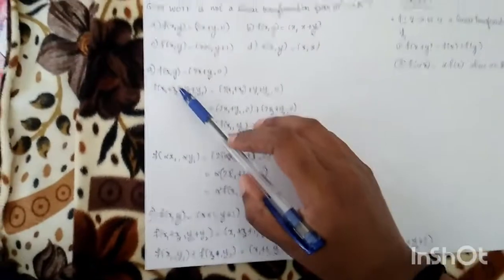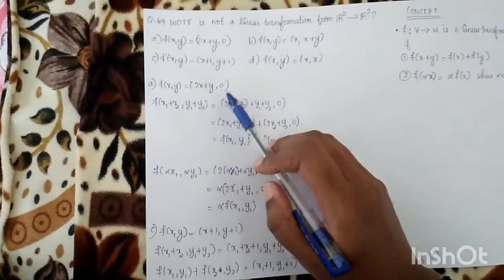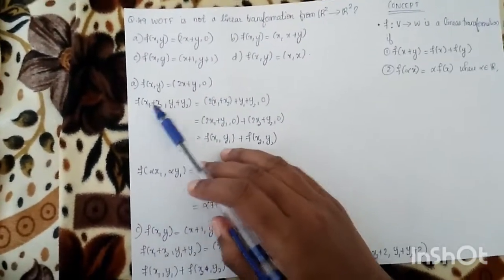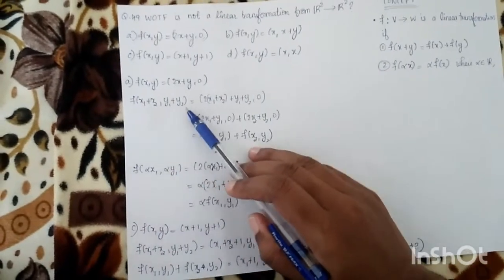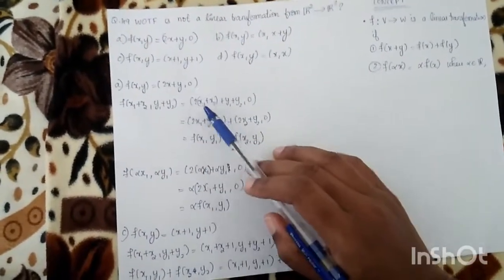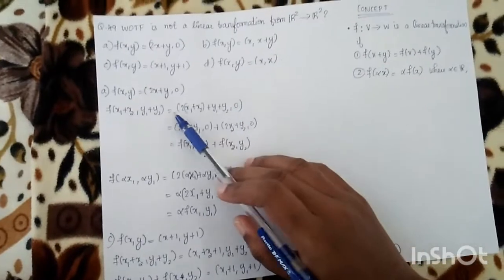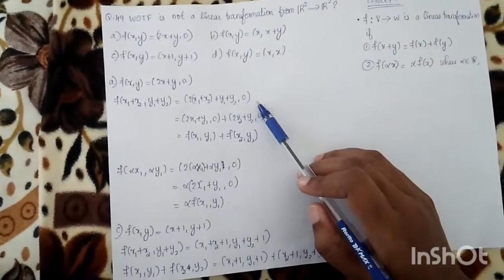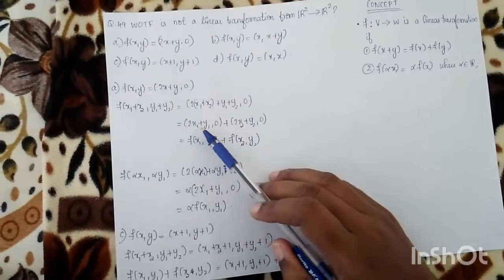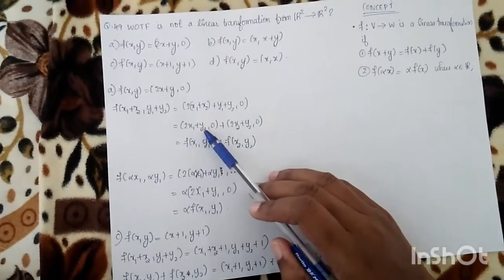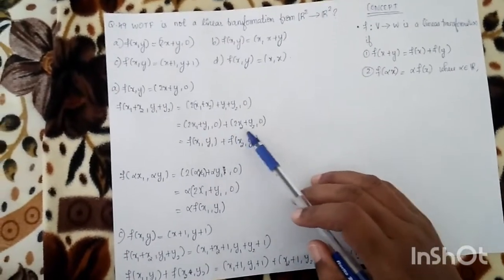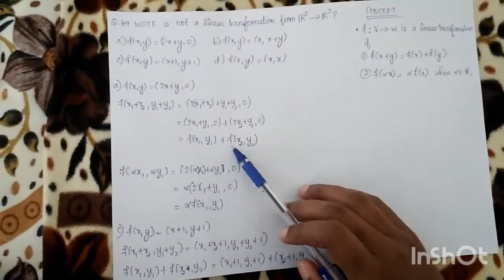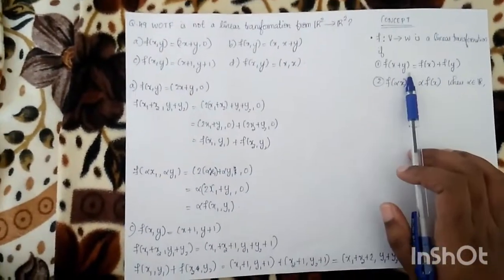First option: f(x,y) = (2x+y, 0). Checking the first condition: f((x1+x2, y1+y2)) = (2(x1+x2)+(y1+y2), 0) = (2x1+y1, 0) + (2x2+y2, 0) = f(x1,y1) + f(x2,y2). So the first condition is satisfied.